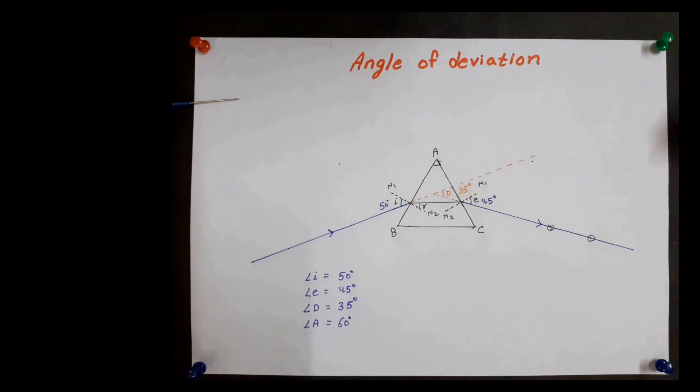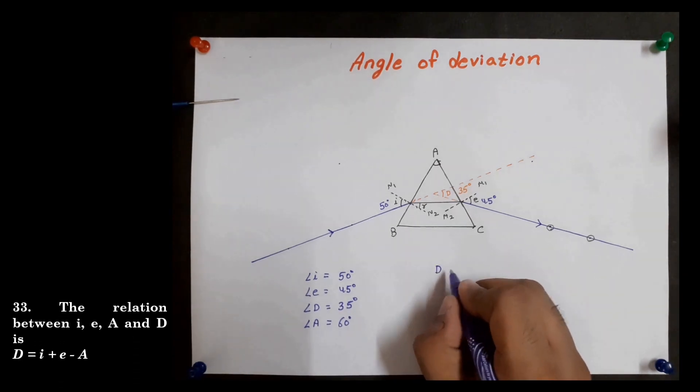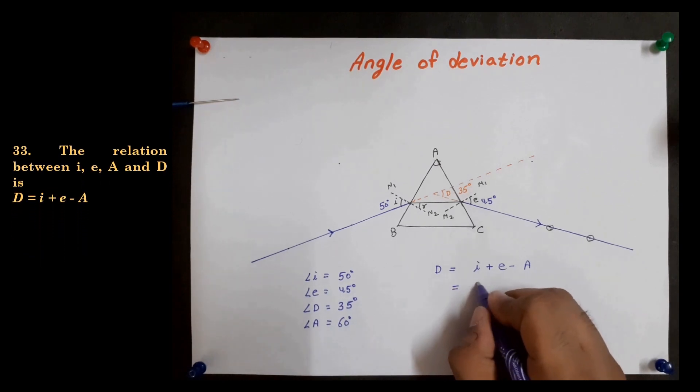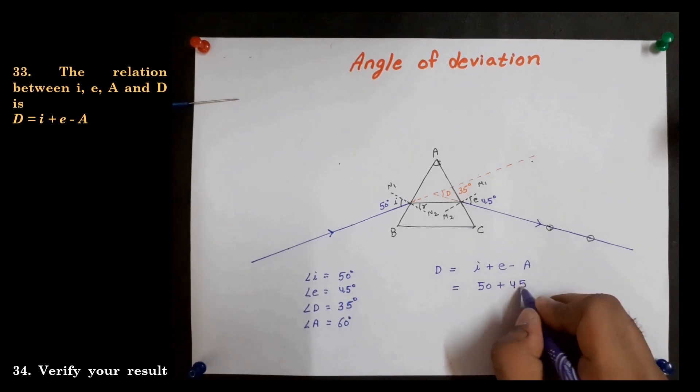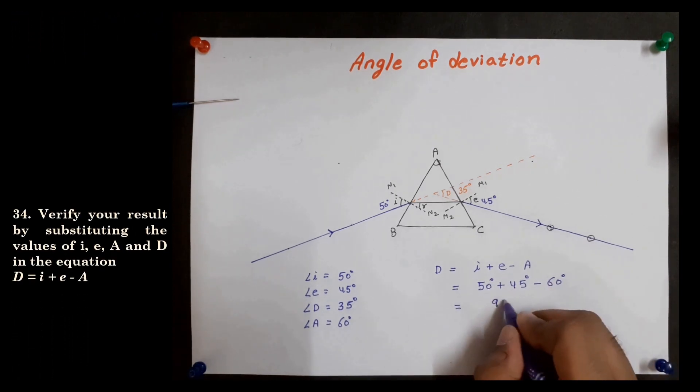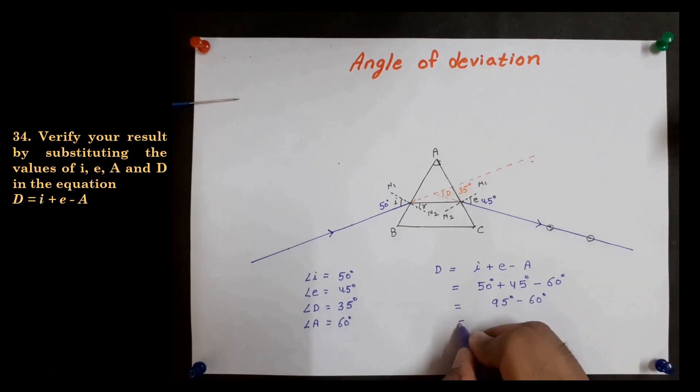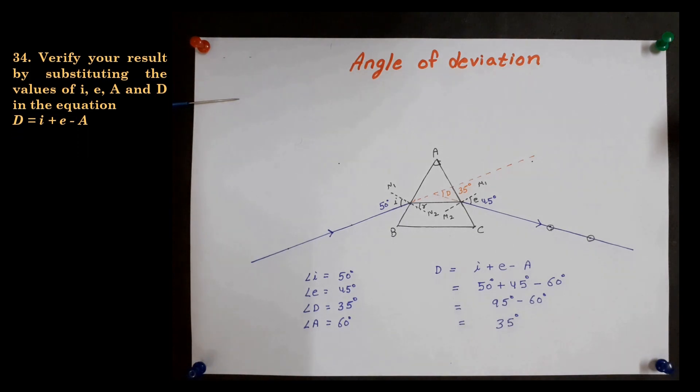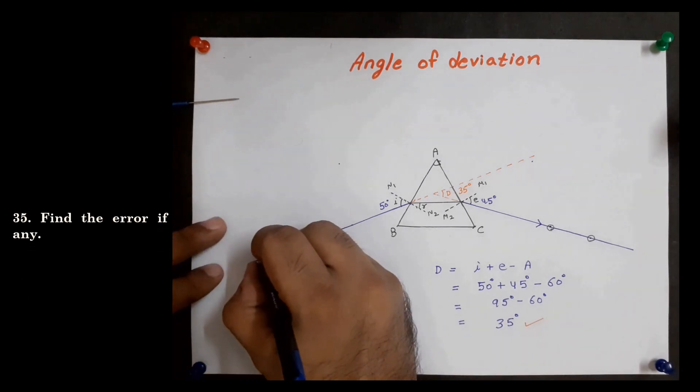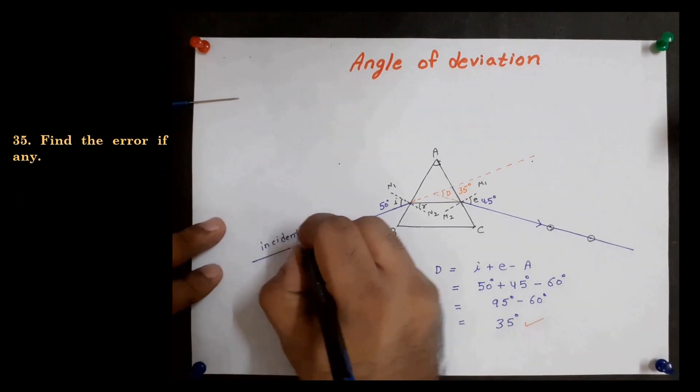The relation between angle of incidence, angle of emergence, angle of prism, and angle of deviation is: D = i + e - A. You can verify your result by substituting the value of i, e, A, and D in the equation. Find the error if any.